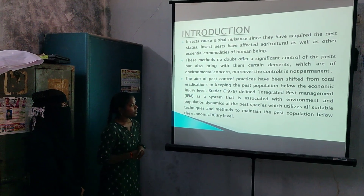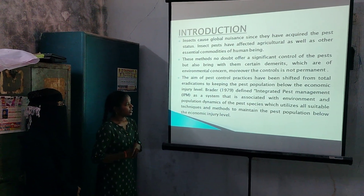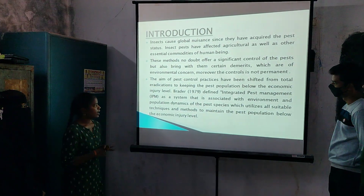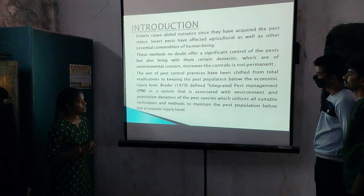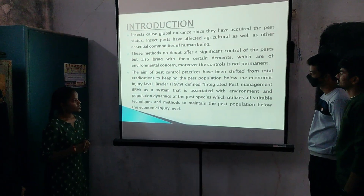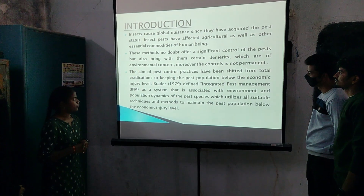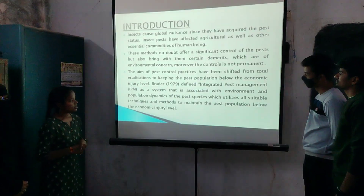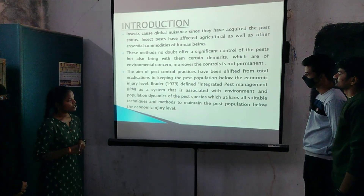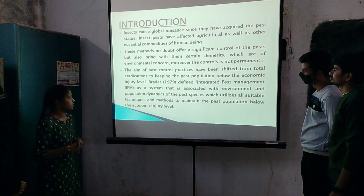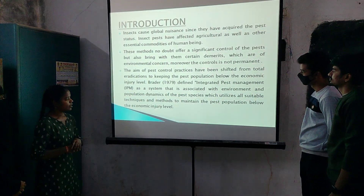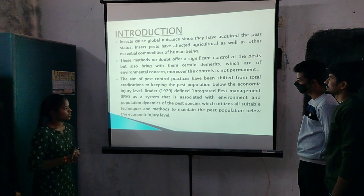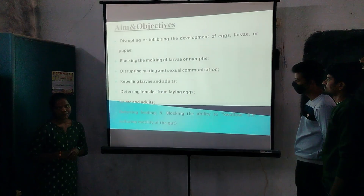Item 79 defined that in integrated pest management, it is a system that is associated with the ecology and population dynamics of pest species, which utilizes all suitable techniques and methods to maintain pest populations below the economic injury level.